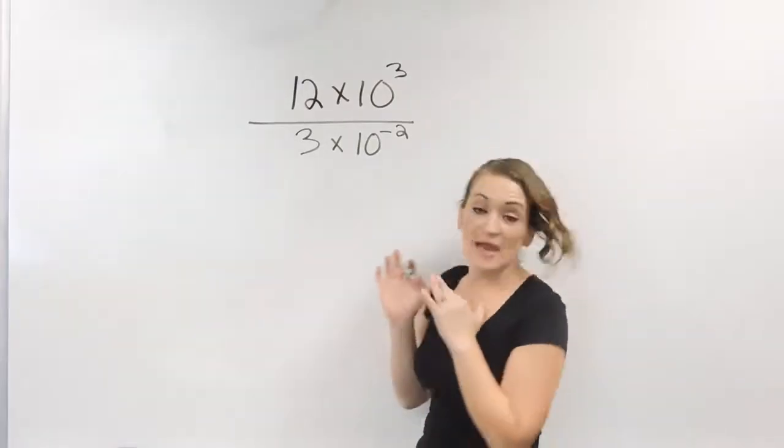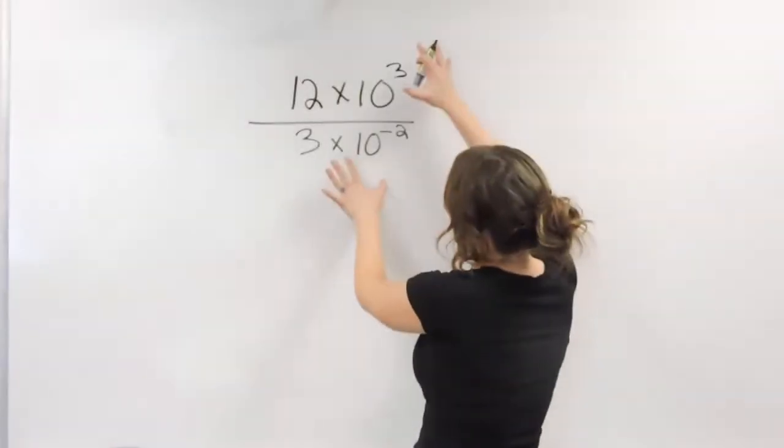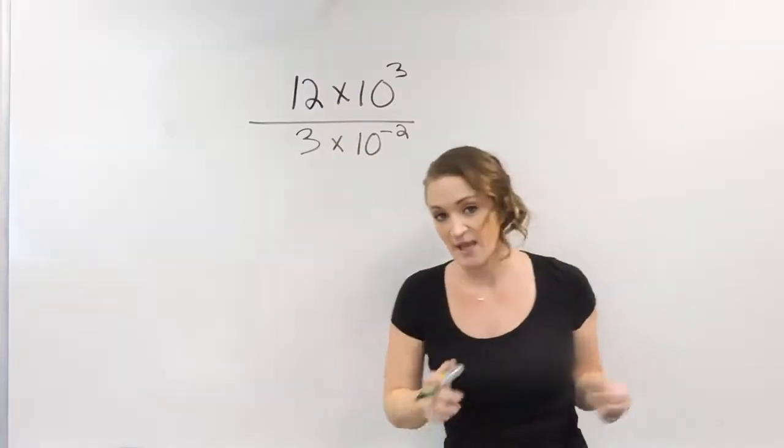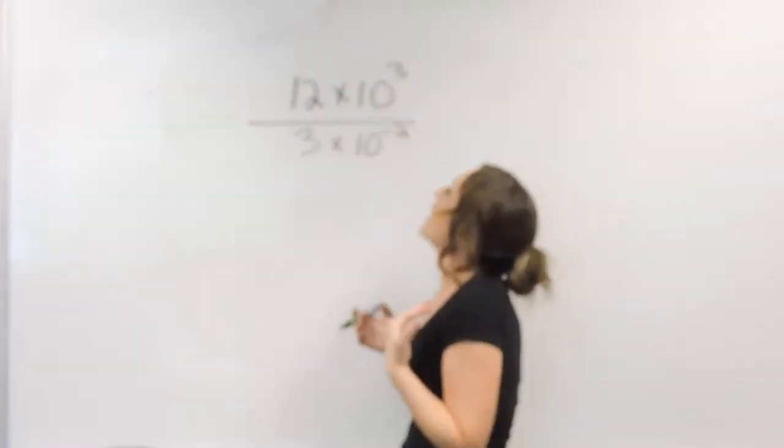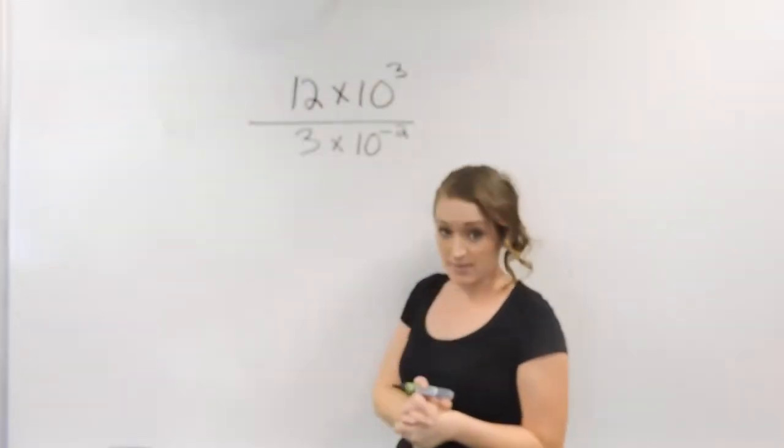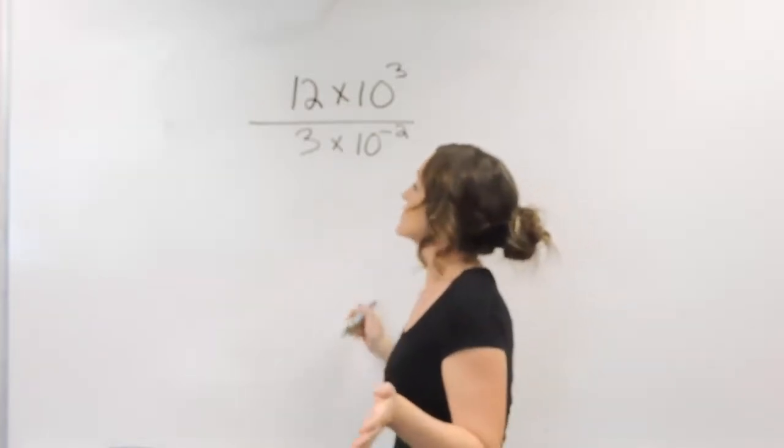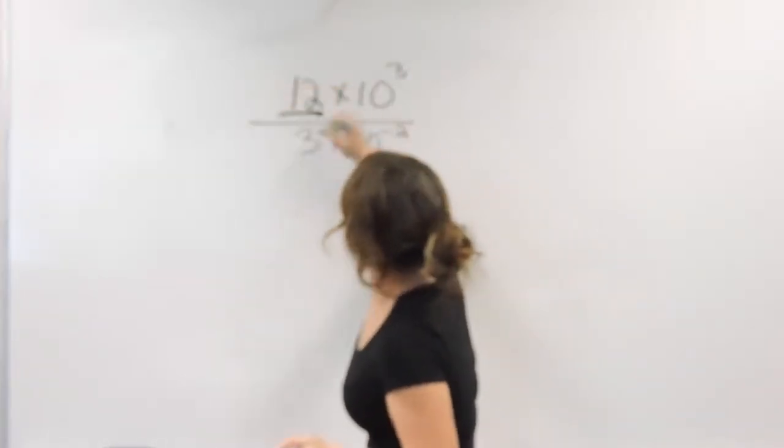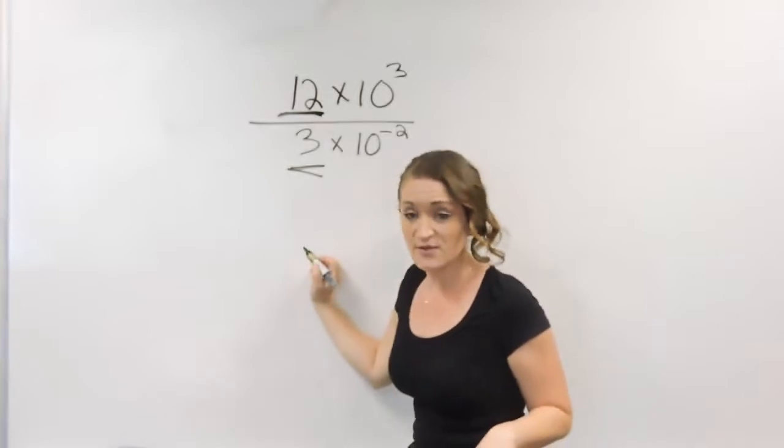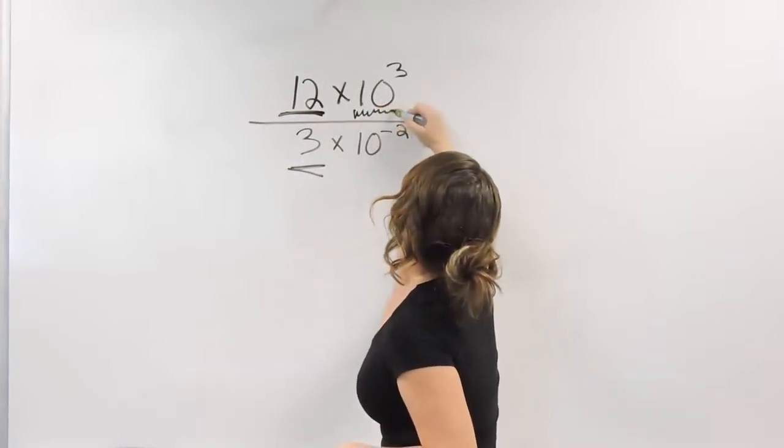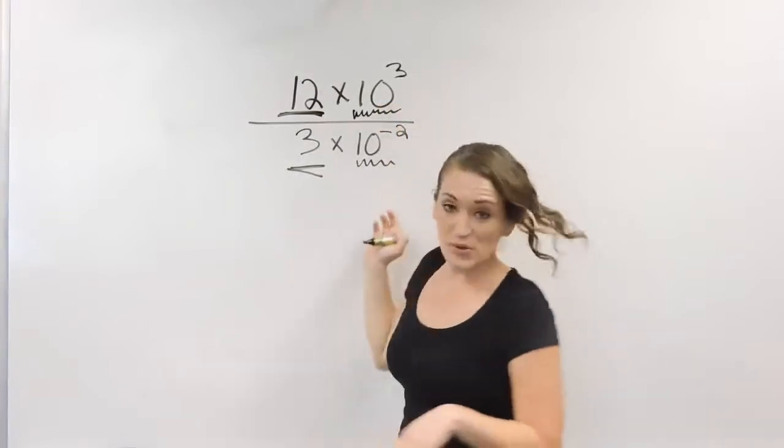When looking at an example like this, both of our numbers are in scientific notation and we're dividing here. The way that we're going to work this problem is we are going to focus on dividing our two numbers together, and then we're going to focus on dividing our exponents together.